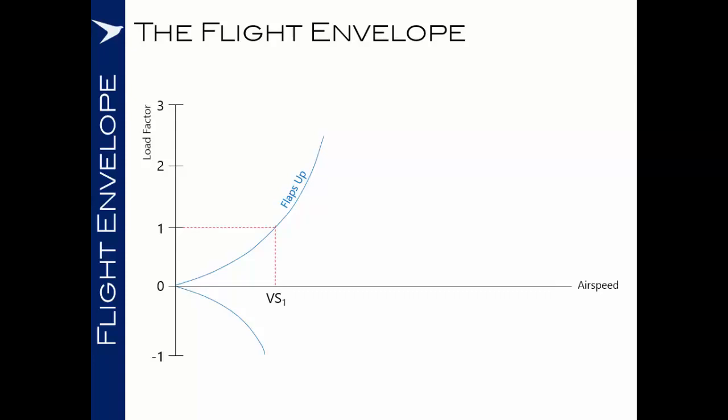When we have the flaps deployed or other high-lift devices, we'll be able to generate a greater amount of lift at lower airspeed. However, it's often the case that with high-lift devices or undercarriage deployed, we have a lower maximum G limit of the aircraft.